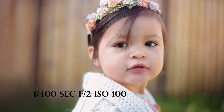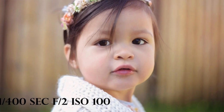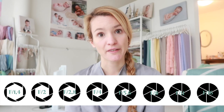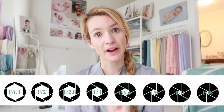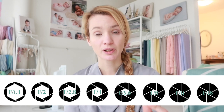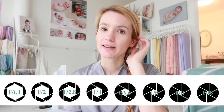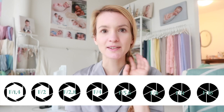The aperture is usually mentioned by a number with the letter F in front of it — so it's usually an F, then a slash, then a number. People also call it an F-stop. Now comes the confusing part: the larger your F-stop, the smaller your aperture. The smaller your F-stop, the larger your aperture.